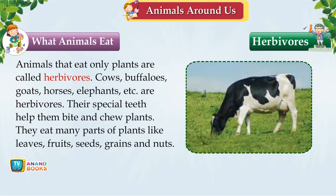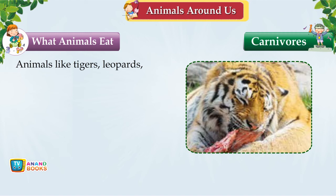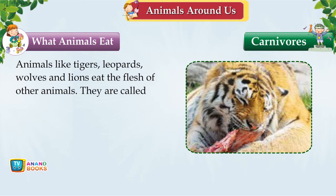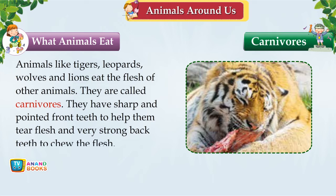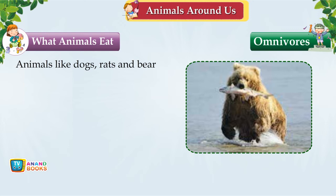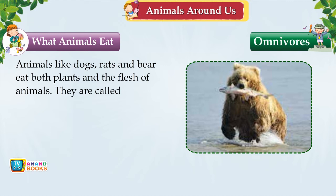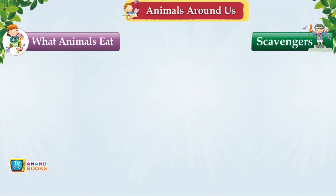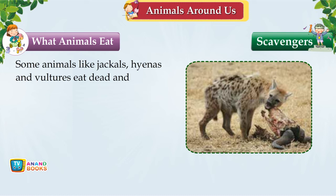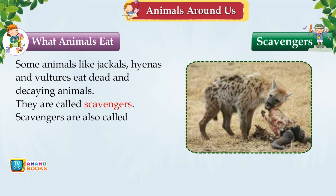Carnivores — animals like tigers, leopards, wolves and lions eat the flesh of other animals. They have sharp, pointed front teeth to tear flesh and strong back teeth to chew it. Omnivores — animals like dogs, rats and bears eat both plants and flesh. Some birds like crows and sparrows are also omnivores. Scavengers — jackals, hyenas and vultures eat dead and decaying animals. They are called nature's sweepers because by eating dead animals they help keep the land clean.